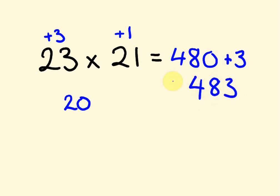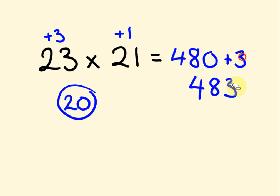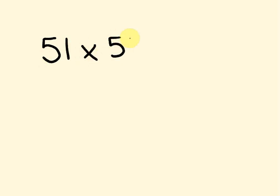What we've been doing with the first part is actually multiplying our number by the base, and this becomes important now as we start looking at base 50. When we multiply numbers near 50 — say 51 times 53 — we decide to use the base number of 50.